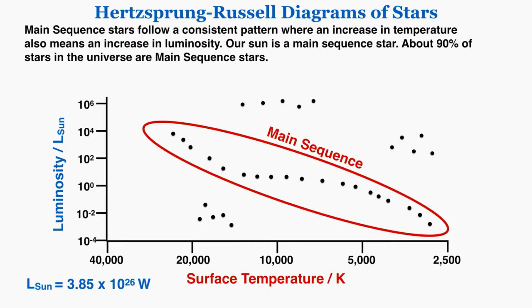The first pattern you might notice is this long streak of stars going roughly linearly all the way down the graph. These are called main sequence stars. They follow a consistent pattern where an increase in temperature also means an increase in luminosity. About 90% of stars in the universe are main sequence stars, and our sun is actually also a main sequence star.